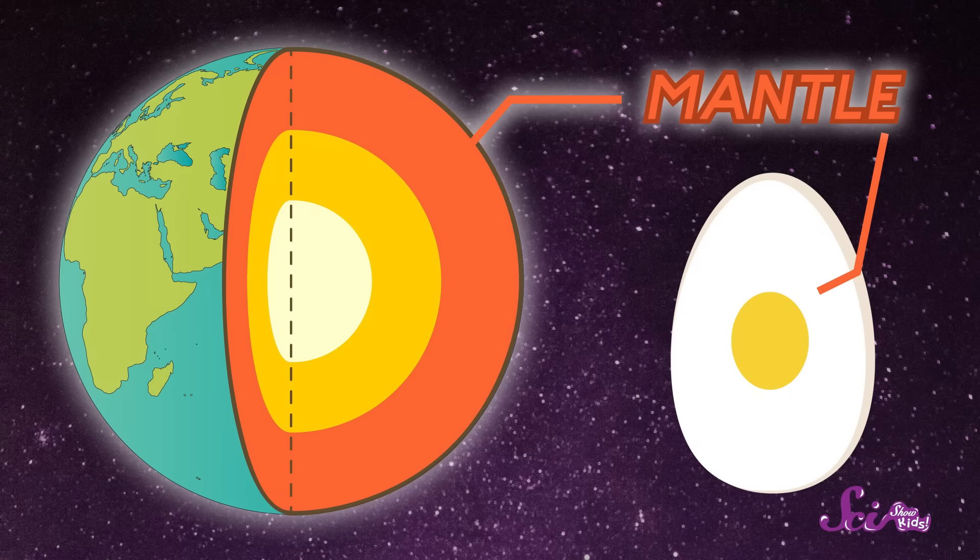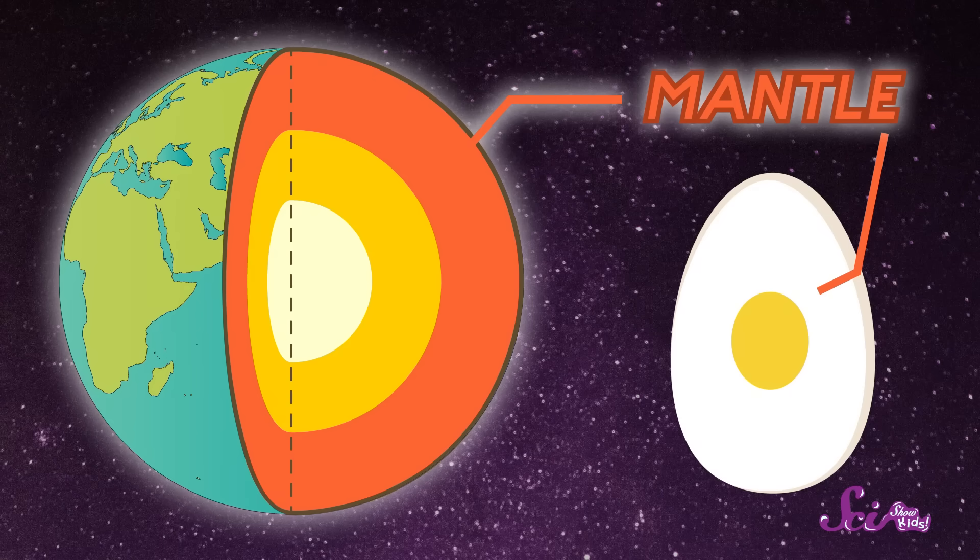It's the thickest layer, just like an egg white takes up the most space in an egg. And it's kind of squishy like an egg white, too. So the rocky crust floats on top of the soft-moving mantle. And beneath the mantle, things get even hotter.